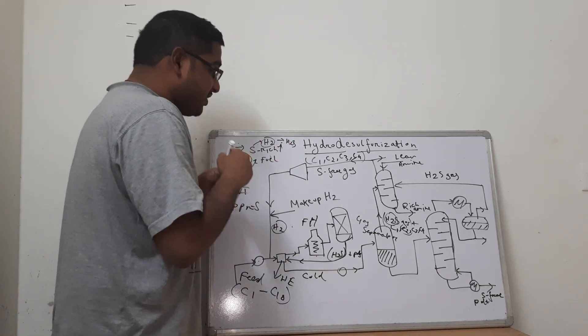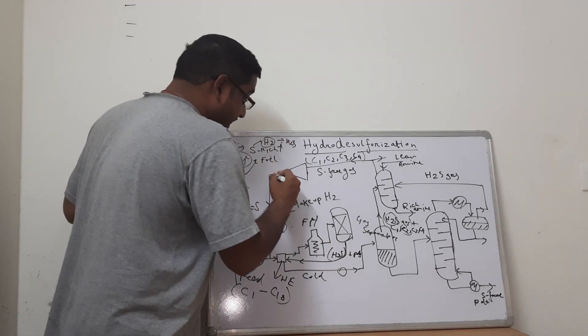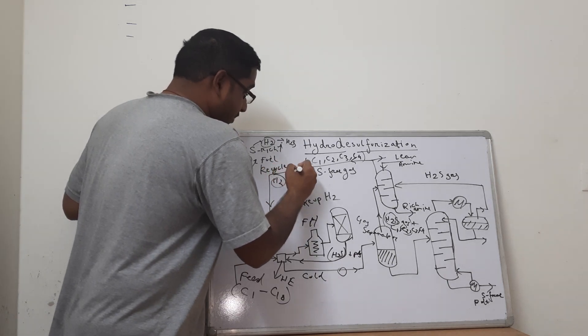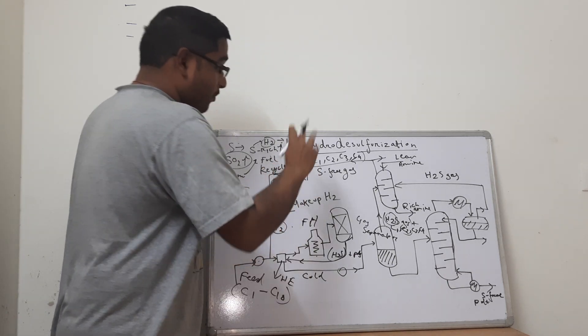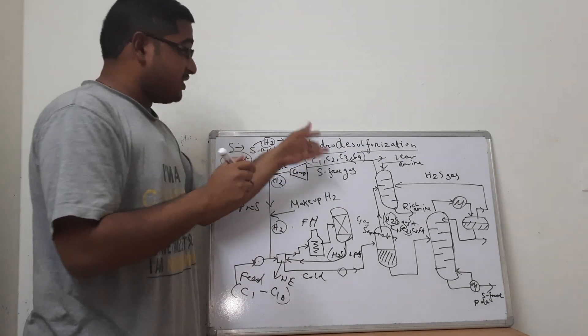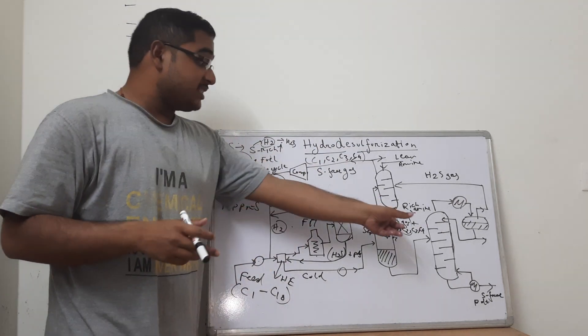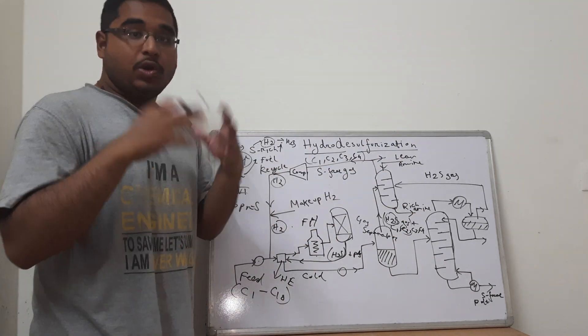So as soon as the H2 leaves the chamber this H2 can be recycled and reused. So this is my recycle stream. This is my compressor that is compressing back the sulfur free gas along with C1, C2, C3, C4 and recycled hydrogen back into the system.